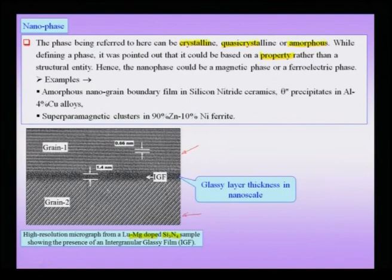Between the two crystalline grains is a different kind of contrast, seen in a high-resolution lattice fringe image in a transmission electron micrograph. This contrast actually comes from a glassy material. The word 'glassy' has been used because the structure of this intergranular glassy film is slightly different from that of the bulk glass which is typically formed.